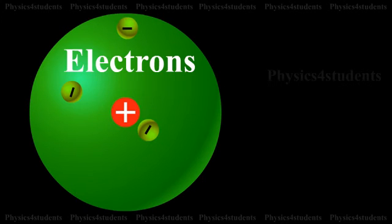The electrons in the atom were considered to be distributed around the nucleus in the empty space of the atom.